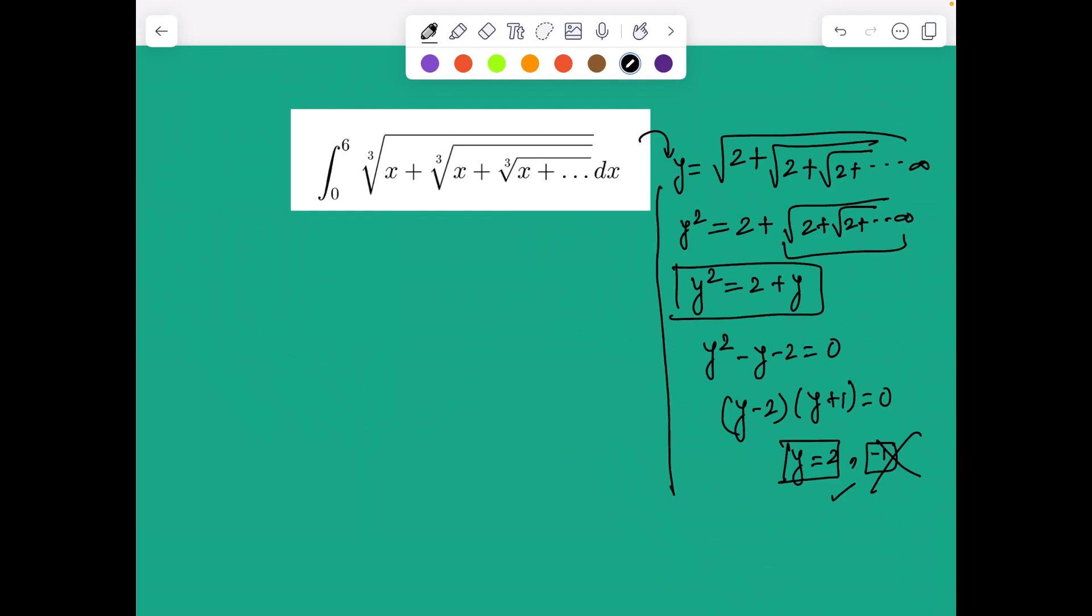Hence y equals 2 is a valid solution. With this similar thought process, I'm ready to attack the question. But here is something interesting and more elegant. As usual, I'll assume the given monster as cube root of x plus cube root of x and so on as y.